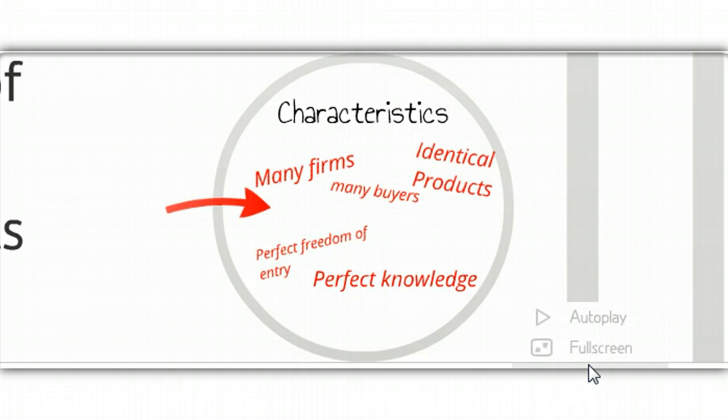Now, of course, this again relies on that perfect knowledge that the consumer knows that there are other cucumber sellers at the market that they could go to. If they, for some reason, didn't know that and thought you had the only cucumbers, or you could convince them your cucumbers were different in some way, it wouldn't be a perfectly competitive market anymore and the price could be changed.